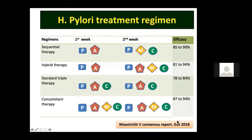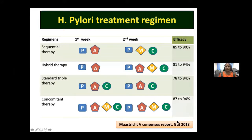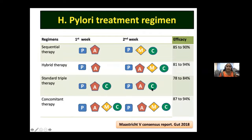H. pylori treatment regimens: standard triple therapy — PPI (esomeprazole 40 mg BD or rabeprazole 20 mg BD), amoxicillin 1 g BD, clarithromycin 500 mg BD — for 14 days. This has about 80 percent success rate, but increasing clarithromycin resistance in India means we need to substitute with levofloxacin or add bismuth as a fourth drug. Concomitant therapy — PPI, amoxicillin, metronidazole, and clarithromycin for 14 days — is simpler to explain and has good efficacy. In India, metronidazole resistance is high, so substitute with tetracycline or bismuth.